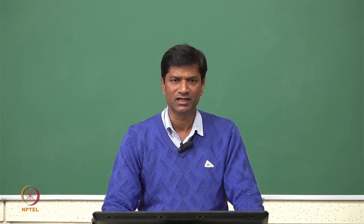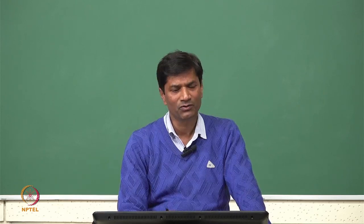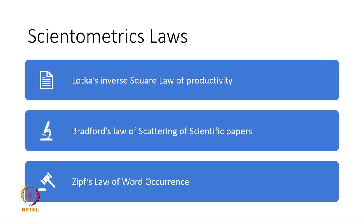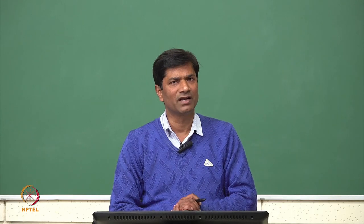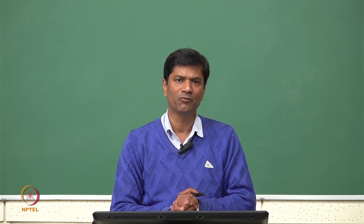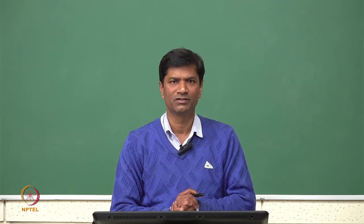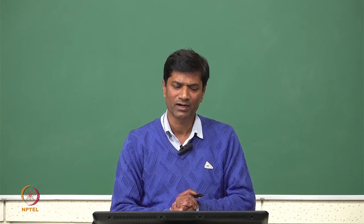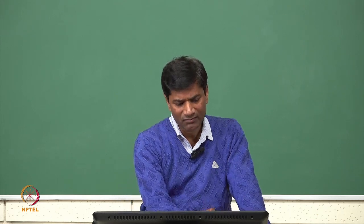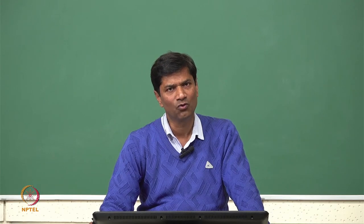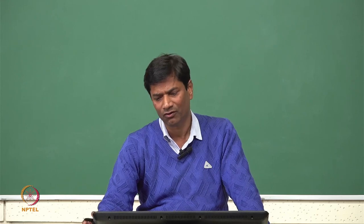Now I am going to cover Lotka's inverse law of scientific productivity. When discussing scientific laws, there are three prominent laws of Scientometrics: the first is Lotka's inverse square law of productivity, the second is Bradford's law of scattering of scientific papers, and the third is Zipf's law of word occurrence. Let us discuss Lotka's inverse square law of productivity.